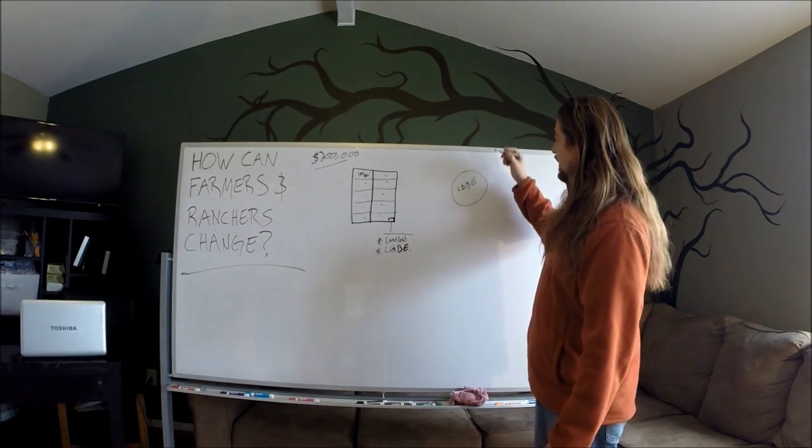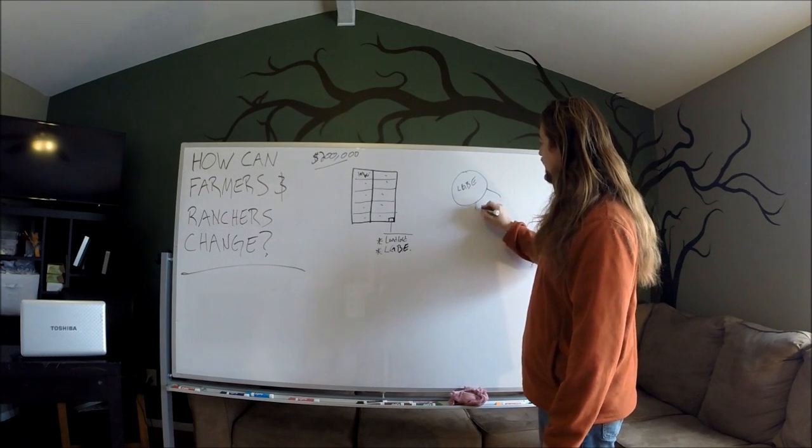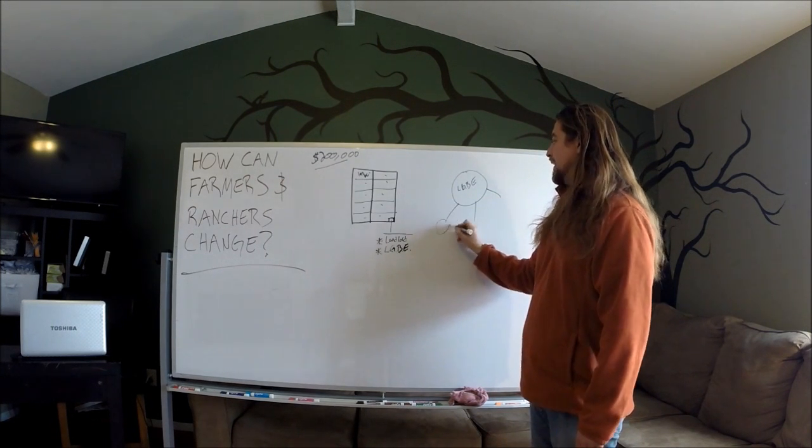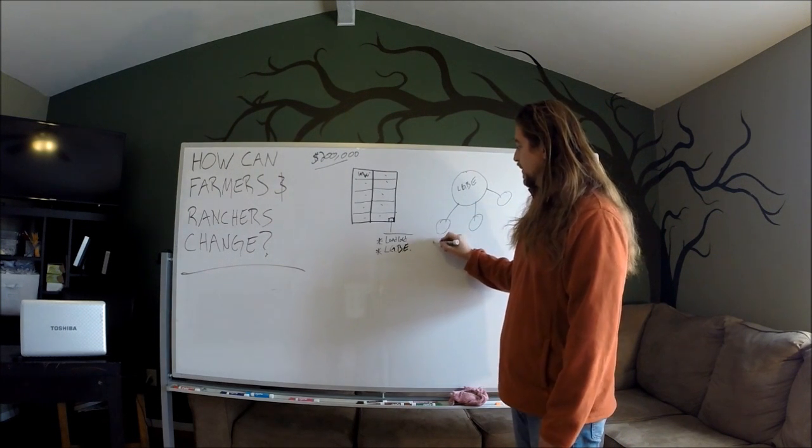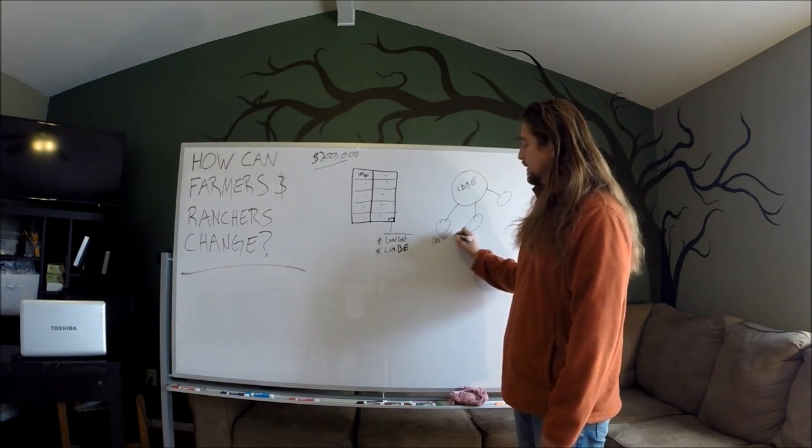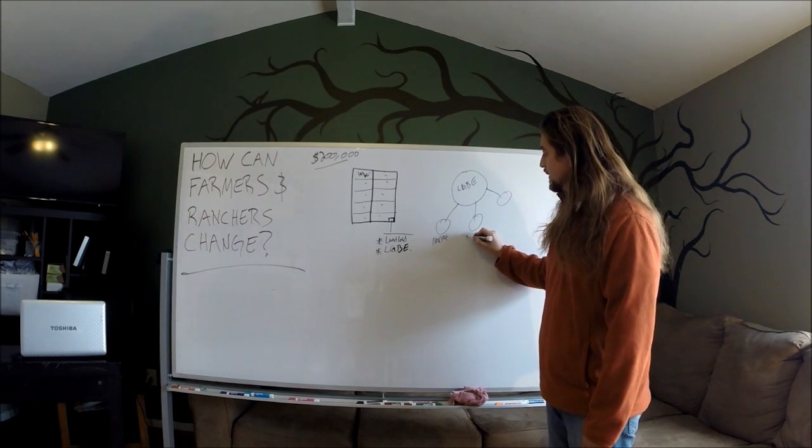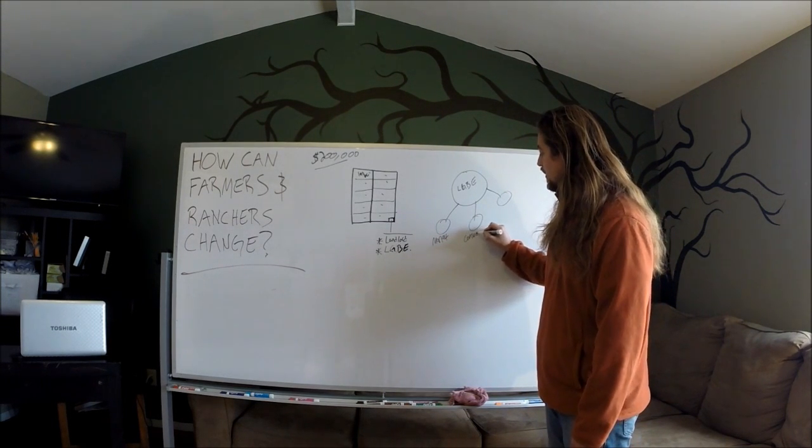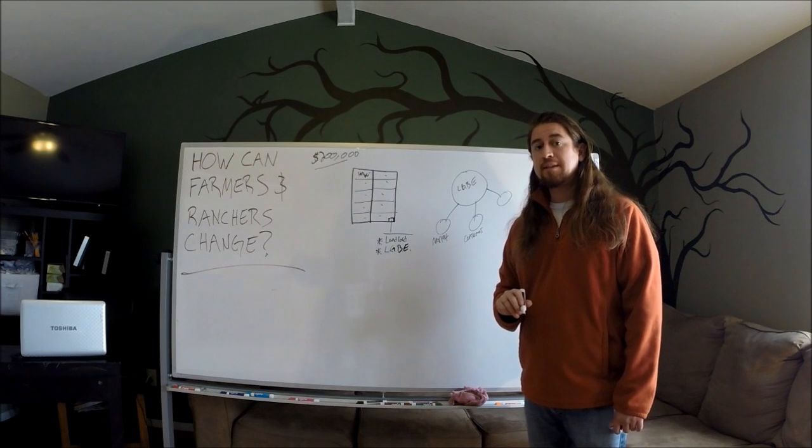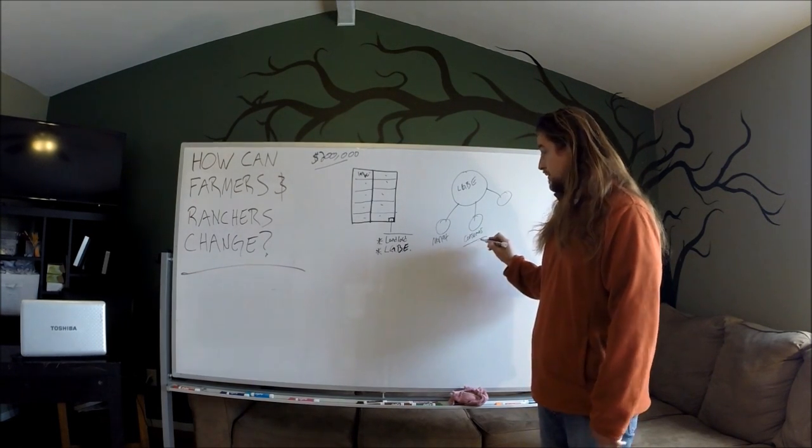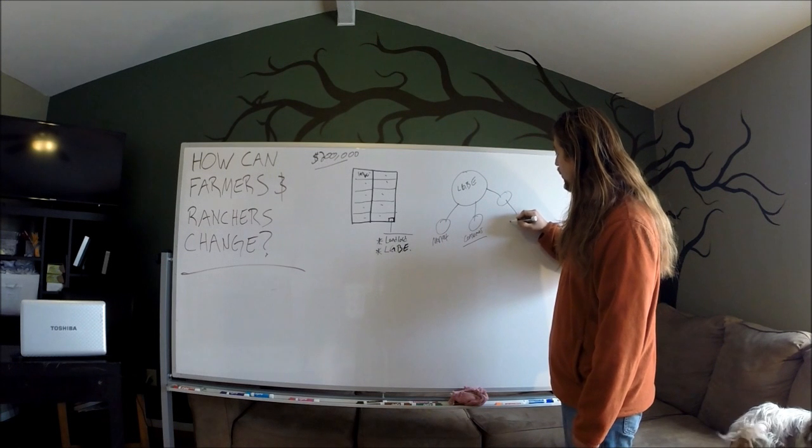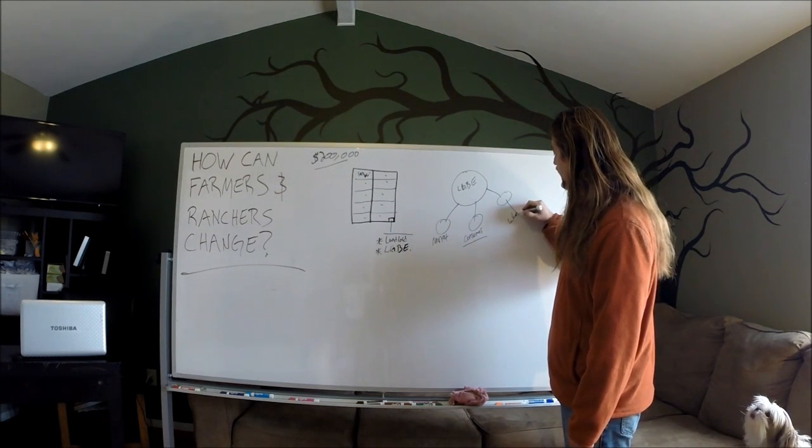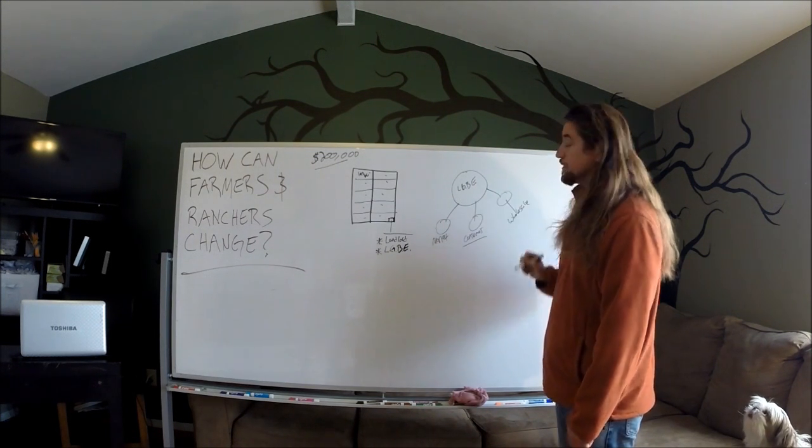And then he sets out buyers. We can go direct to market with this, like farmer's markets. We can go directly to consumer with co-ops and CSAs. This is a very lucrative way to do this. And then we can go wholesale to restaurants.